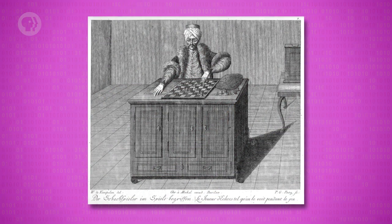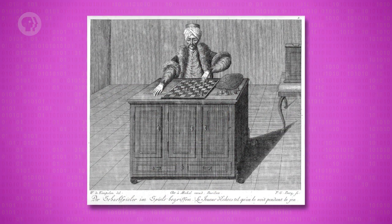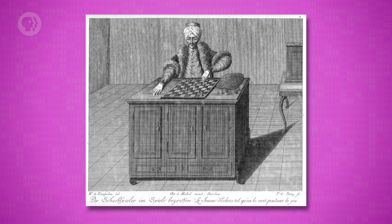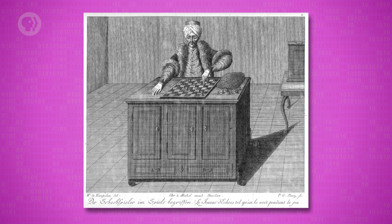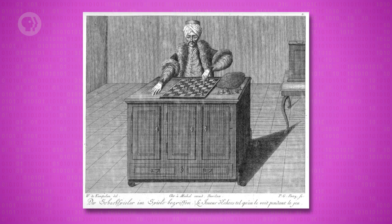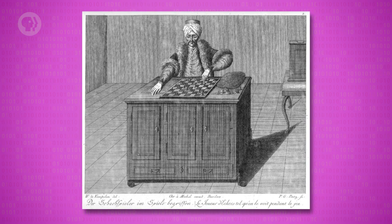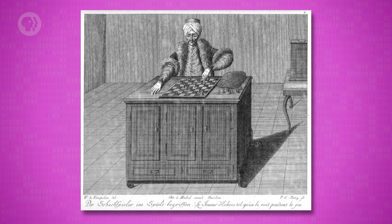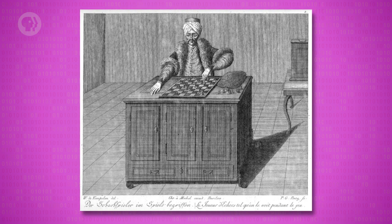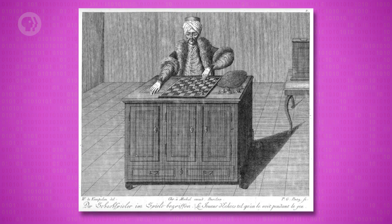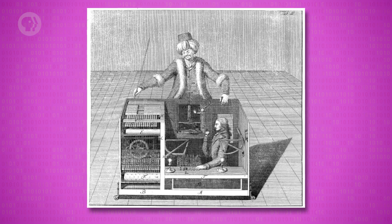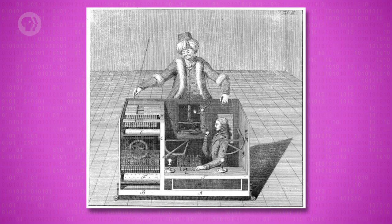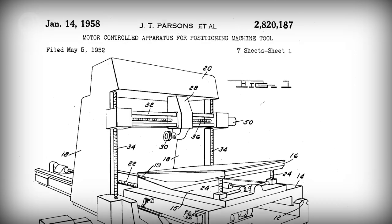One of the most infamous examples was the Mechanical Turk, a chess-playing humanoid automaton. After construction in 1770, it toured all over Europe, wowing audiences with its surprisingly good chess playing. It appeared to be a mechanical artificial intelligence. Unfortunately, it was a hoax – there was a dainty human stuffed inside the machine.